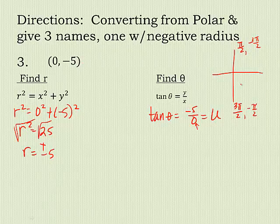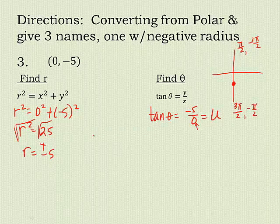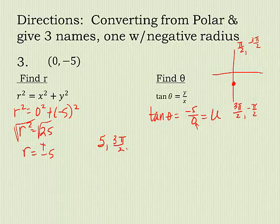Zero and negative 5. If I plot to that point, that really is down here. This is my beginning point. So, my angle, my radius then is 5, 3π over 2. That's my starting point. Another name for this angle right here is negative π over 2. So, it's 5, negative π over 2.